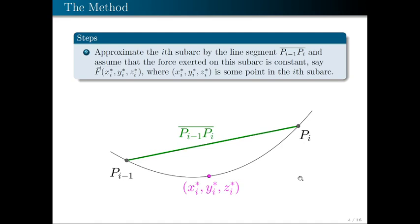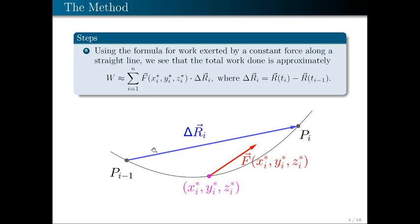Moreover, instead of an arc, we approximate it by a line segment from P_{i-1} to P_i, so that displacement and path are parallel and we can use the work formula. The displacement is denoted Δr_i, and the force is F evaluated at this point. The work done on this subarc is given by the dot product F · Δr_i.